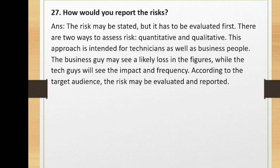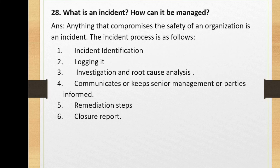What is an incident and how is it managed? Anything that compromises the safety of an organization is an incident. The incident management process involves five steps: incident identification and logging, investigation and root cause analysis, communicating and keeping senior management informed about the incident, remediation steps, and closure — followed by reporting generated after the incident has been handled.